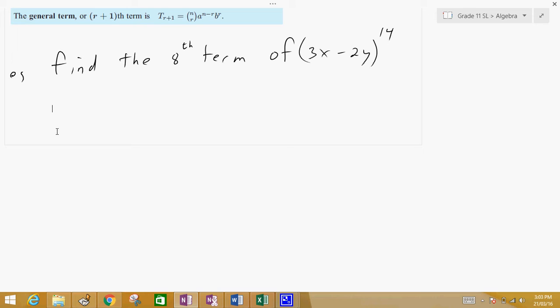So, for instance, if I have something like this, where I find the 8th term of 3x minus 2y to the power of 14.